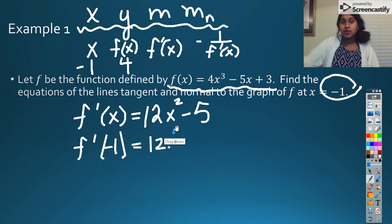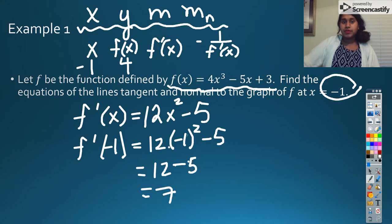So this becomes 12x squared minus 5. So if I apply f prime of negative 1, that means I'm just going to plug that in. 12 times negative 1 squared minus 5. Well, negative 1 squared is simply a positive 1. So that becomes 12 minus 5, just 7. So that's our slope. And I can literally just take that 7 and say the normal is negative 1 over 7. So now I have four bits of information.